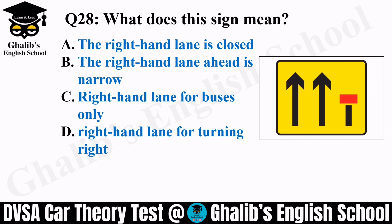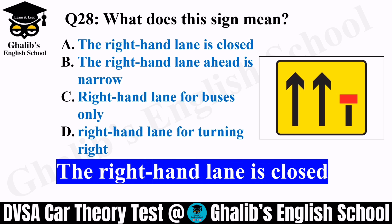Question 28. What does this sign mean? There are three lanes: left-hand, middle, and right-hand. Options: the right-hand lane is closed, the right-hand lane ahead is narrow, the right-hand lane is for buses only, or the right-hand lane is for turning right only. The best practice is the right-hand lane is closed. If you are traveling in the right-hand lane, give a signal in good time and move to the middle or left-hand lane — do all observations, check your blind spot, signal, then maneuver.